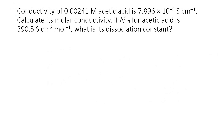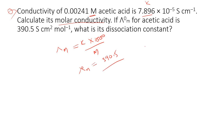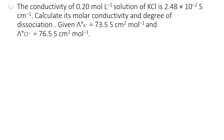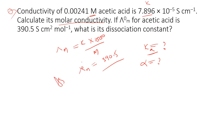We have some more problems for homework. Concentration and conductivity K are given; calculate molar conductivity using K × 1000 / molarity. Lambda naught is given as 390.5; calculate dissociation constant. You also need to calculate alpha. These are assignment questions for you to solve.